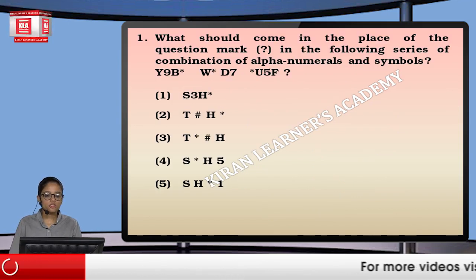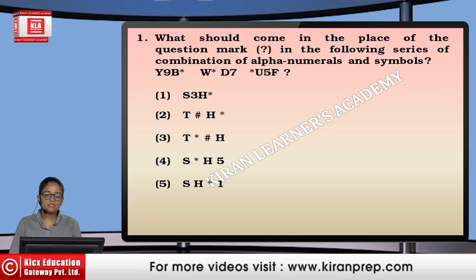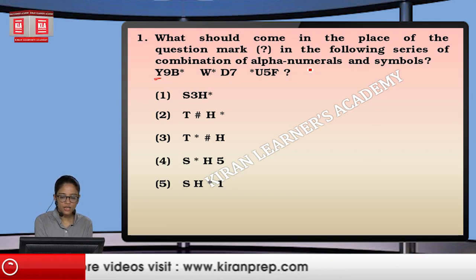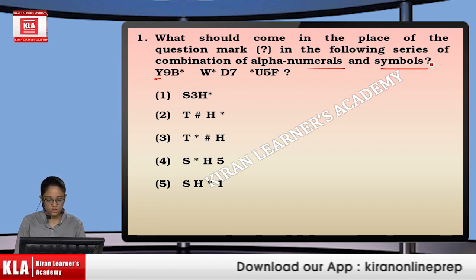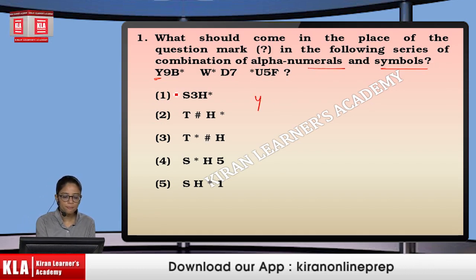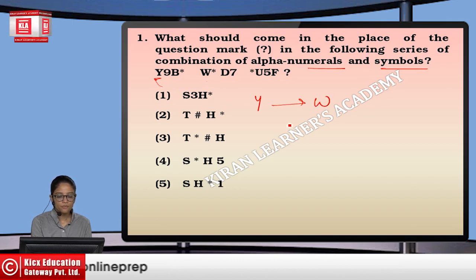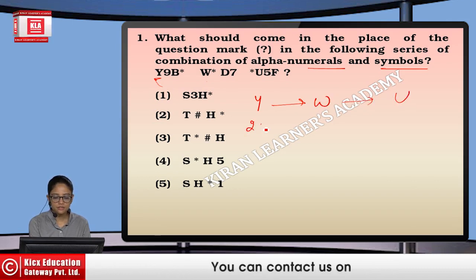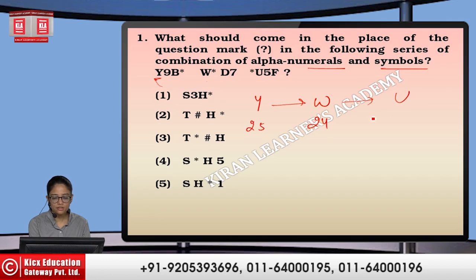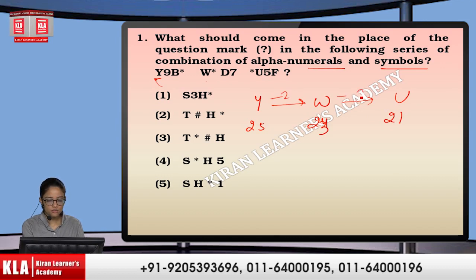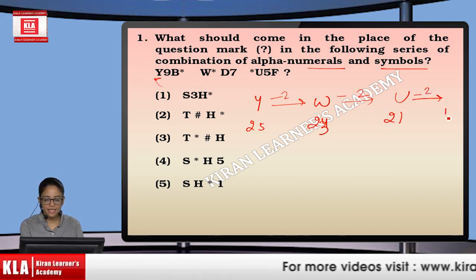First question: what should come in the place of the question mark in the following series involving a combination of alpha-numerals and symbols? We have alphabets, numerals, and symbols — a combination of three. We will compare the first letter of the first term with the second term and then the third term. The numbers are 25, 24, and 23 — so the pattern is minus 2, minus 2.